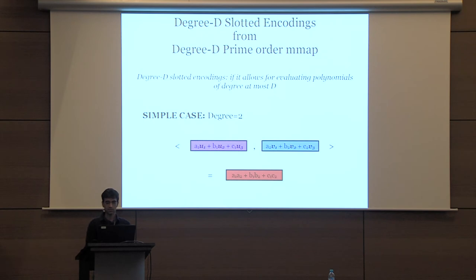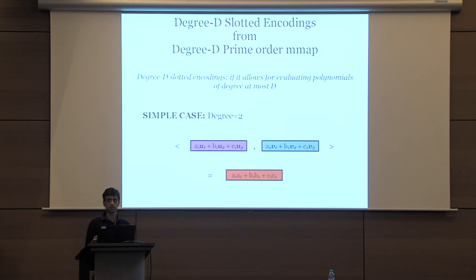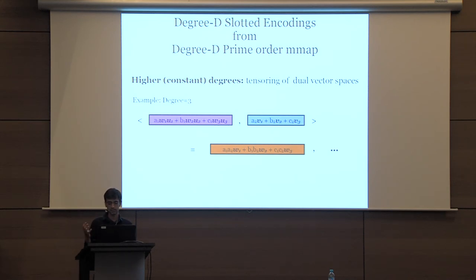If you compute an inner product of these two encodings, you end up with an encoding of A1·A2 + B1·B2 + C1·C2, allowing component-wise multiplication. For higher degrees, we can only do this transformation for constant degree, and we consider tensoring of dual vector spaces.